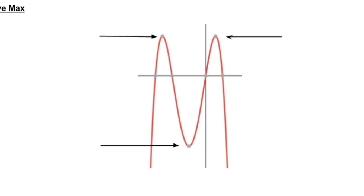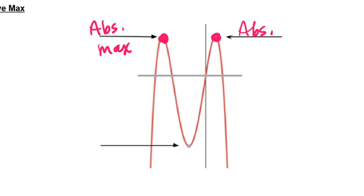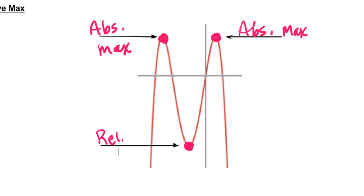Similarly, if that curve were flipped upside down, these two spots — the two hills at the top — there's nothing higher than those, so they would be called an absolute max. So: absolute minimums if there's nothing lower, absolute maximums if there's nothing higher. But if there's stuff that's higher or lower, then that's going to be called a relative max or min. So the point in the valley between the two crests would be called a relative min.